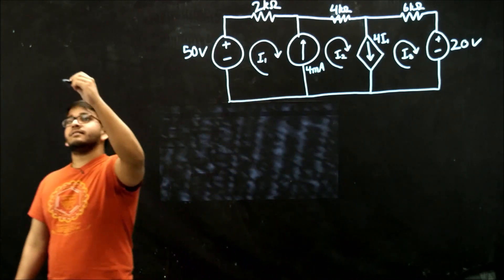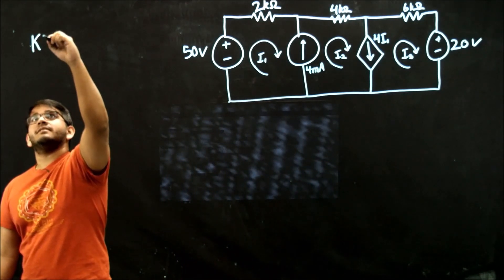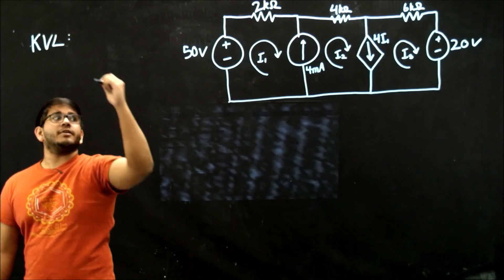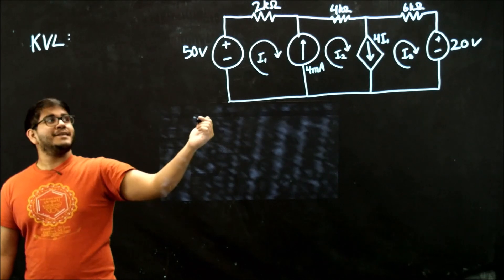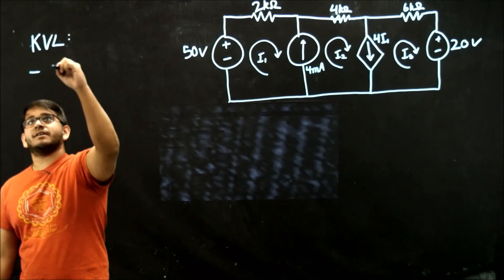So let's start with that. So we're going to be using KVL, and starting from the lower left-hand corner and working clockwise, we're going to subtract 50 volts.